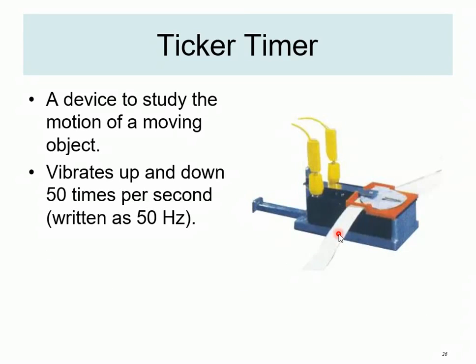What is the Ticker Timer? A Ticker Timer is actually a device to study the motion of a moving object, and it vibrates up and down 50 times per second, or we normally write it as 50 Hz. So this particular vibrator will vibrate — it will move up and down 50 times in one second.